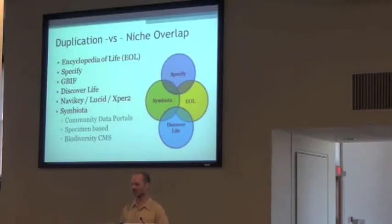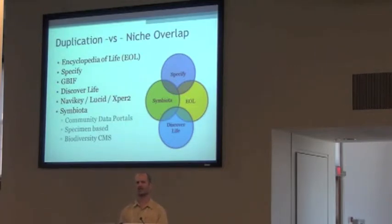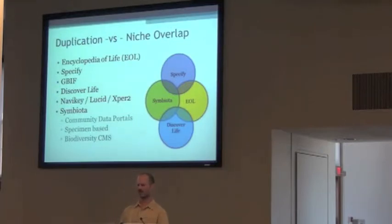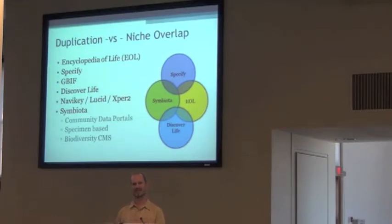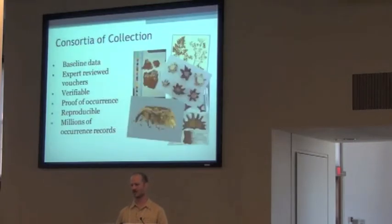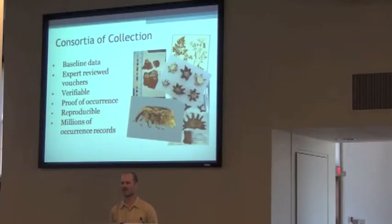One way that Symbiota is different from Specify and EOL is that it's a community portal — a consortium of multiple collections, not just one. It's specimen-based, whereas EOL is more of a taxon-based aggregator of information. And it's a content management system where all the data can be managed directly within the portal by the users, with multiple data sets typically owned by multiple folks who all manage their data through the web interface.